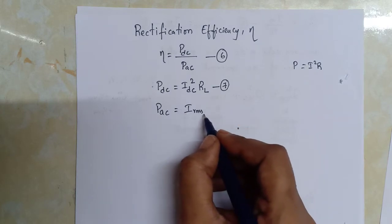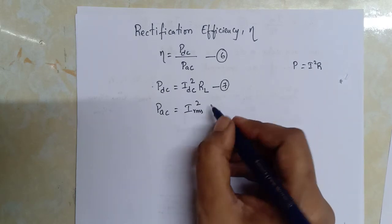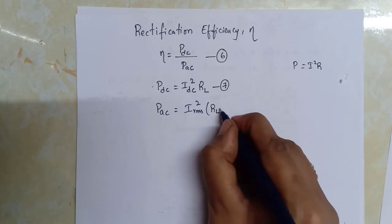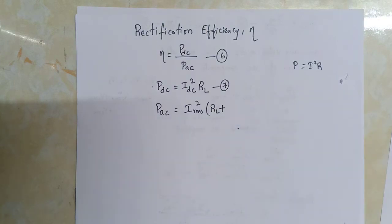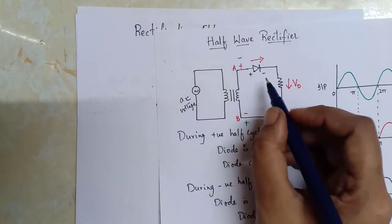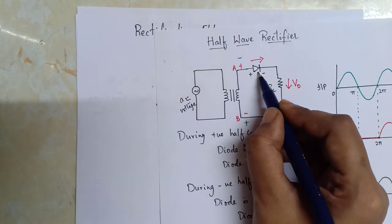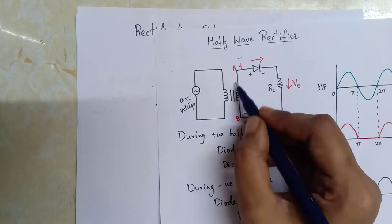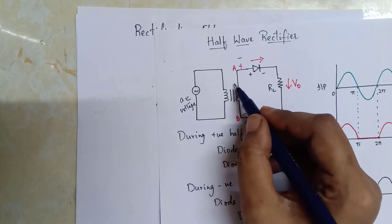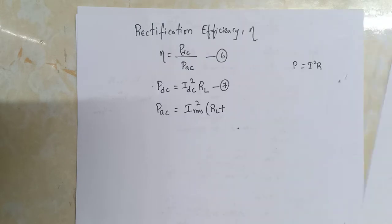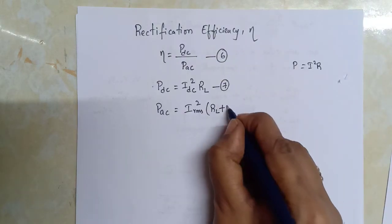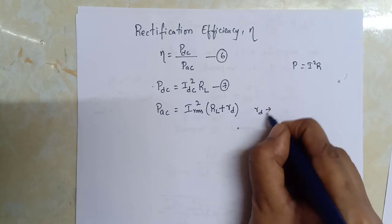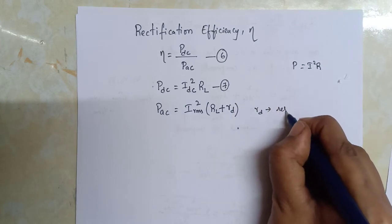We write this as IRMS² into the total resistance RL plus we also have diode in the circuit, so we have to consider the resistance of the diode as well as load resistor. So here we write RL + Rd where Rd is the resistance of the diode.